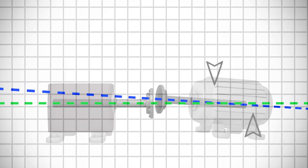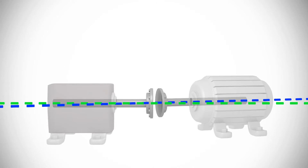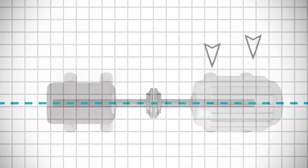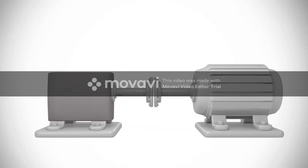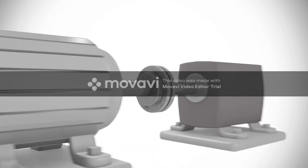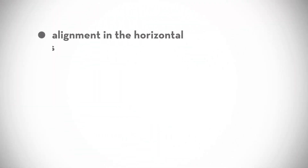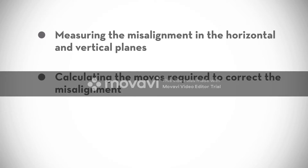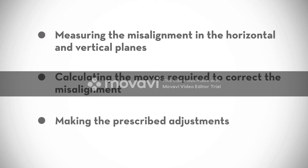We can raise and lower the moveable machine in the vertical plane, and we can move it side to side in the horizontal plane. If we get the shafts aligned in these two dimensions or planes, they will then be in tolerance and close to collinear. The challenge of precision alignment can therefore be defined as: first, measuring the misalignment in the horizontal and vertical planes; second, calculating the moves required to correct the misalignment; and finally, making the prescribed adjustments.